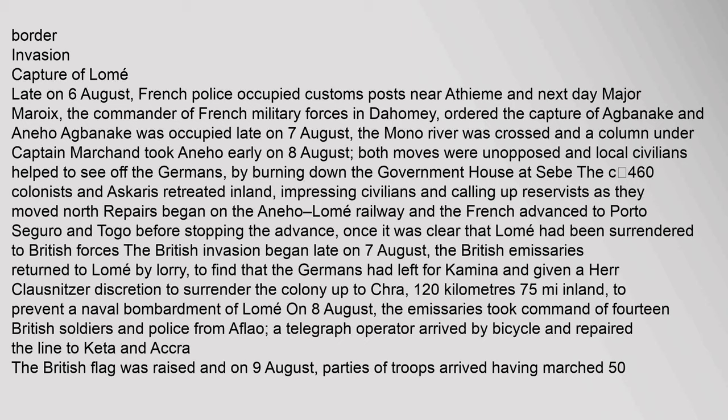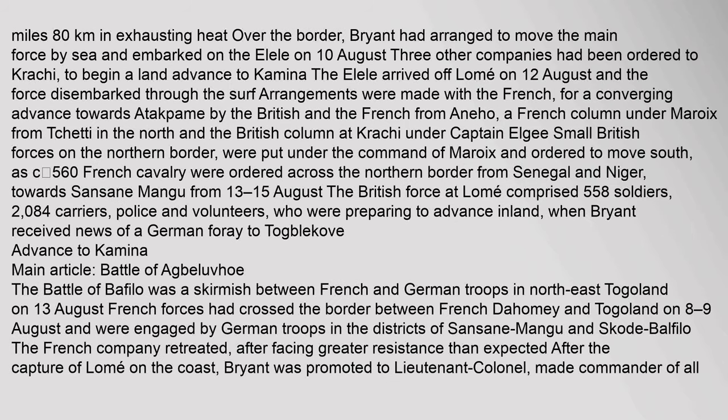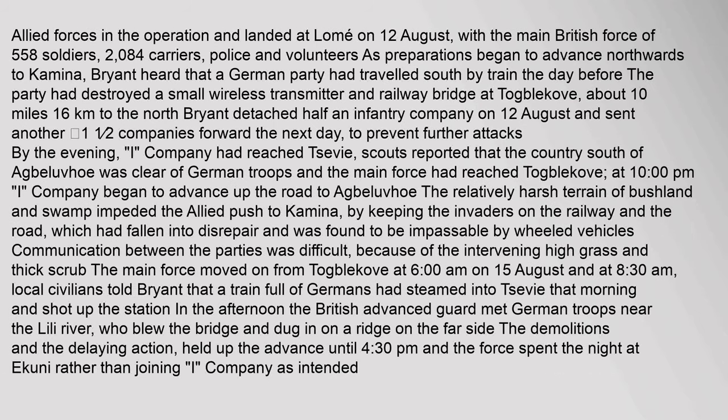The British invasion began late on 7 August. The British emissaries returned to Lomé by lorry to find that the Germans had left for Kamina, and given a Herr Klausnitzer discretion to surrender the colony up to Chra, 120 km away. Allied forces landed at Lomé on 12 August with the main British force of 558 soldiers, 2,084 carriers, police and volunteers, as preparations began to advance northwards to Kamina.